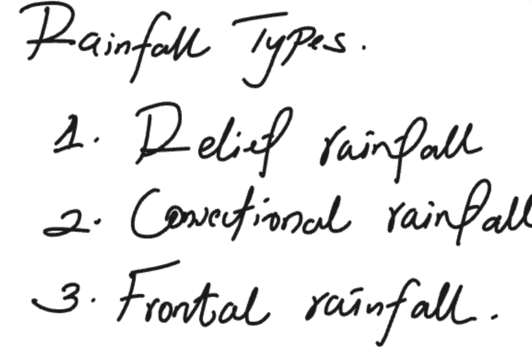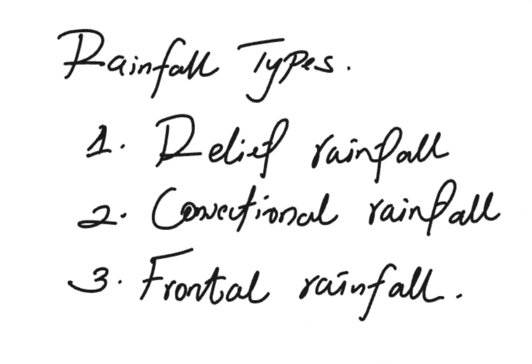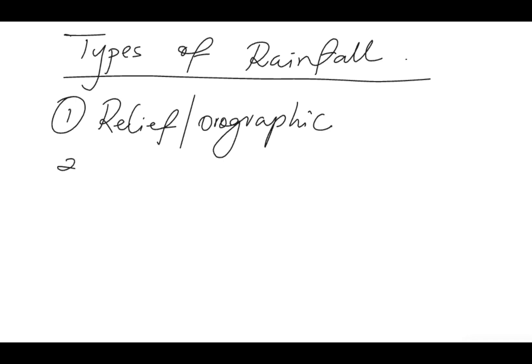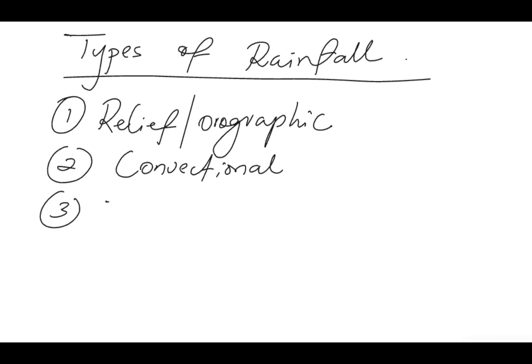Welcome to this video tutorial. Here I'll be discussing the three types of rainfall. In my previous video I covered the rain formation process. The three types of rainfall are: relief rainfall, which is also known as orographic; convectional rainfall; and lastly frontal rainfall, which is known as cyclonic rainfall — named so because of its association with cyclones.